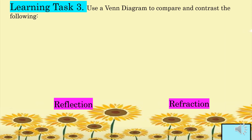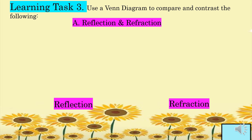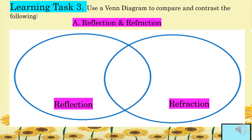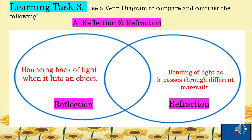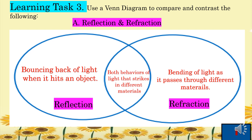For Learning Task 3, use a Venn diagram to compare and contrast the following. For letter A, reflection and refraction. For reflection: bouncing back of light when it hits an object. For refraction: bending of light as it passes through different materials. Both are behaviors of light that strike different materials.